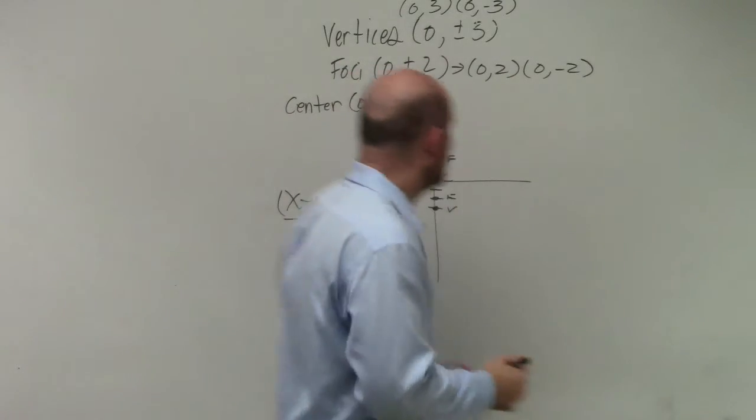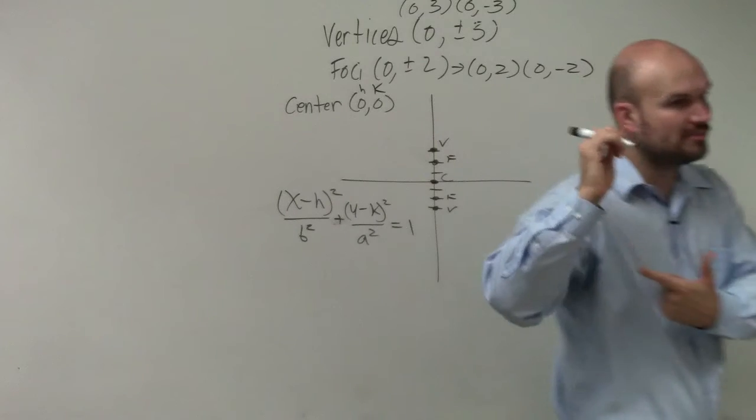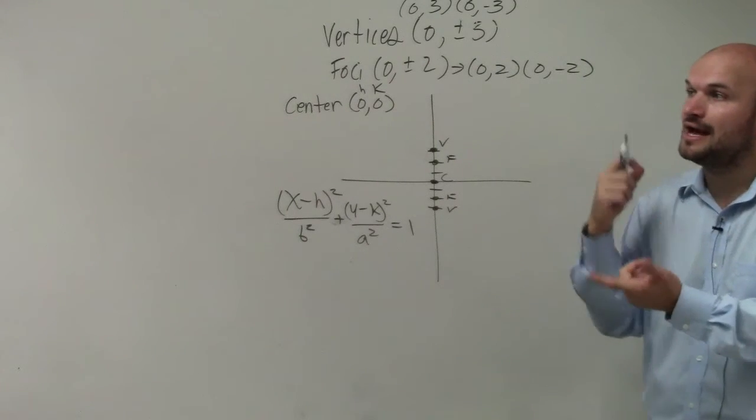So I'll write down the center is 0 comma 0. Now, remember, what does the center represent? That's your h k, right? That's in your formulas that we wrote in. Now, the next thing is we need to figure out a and b.